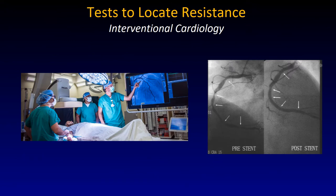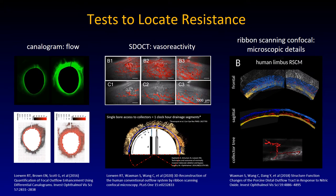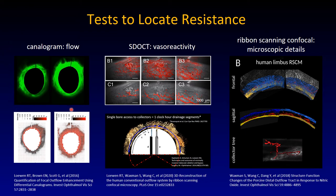No other specialty would go ahead and just do surgery and hope for the best without imaging the structure being treated. In interventional cardiology, you perform an angiogram using radiopaque material to see where the blockage is, and then insert a stent to allow better flow. What tests exist that can assess the outflow system structurally? There is the canalogram, where dyes are injected.